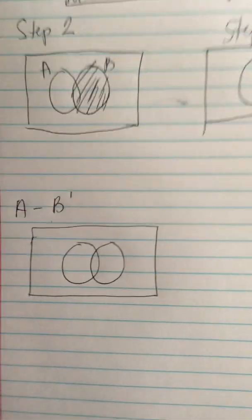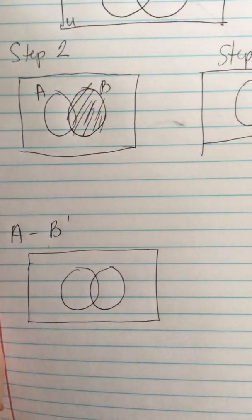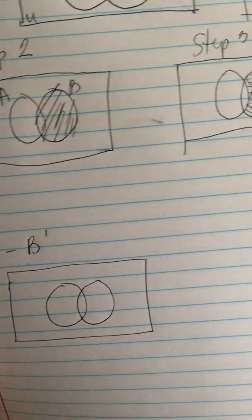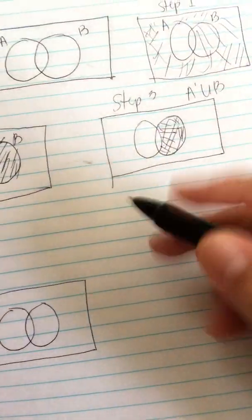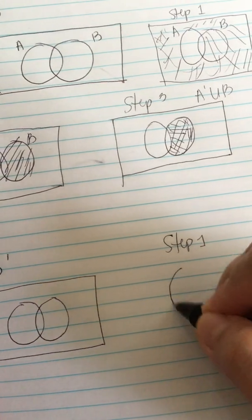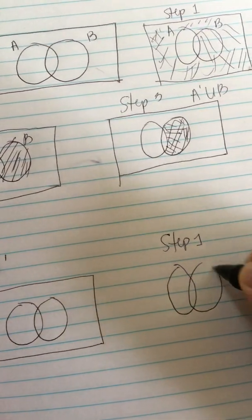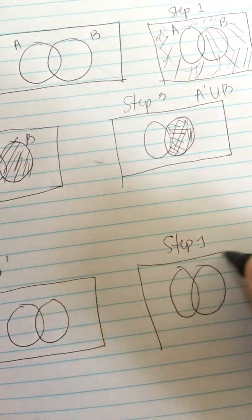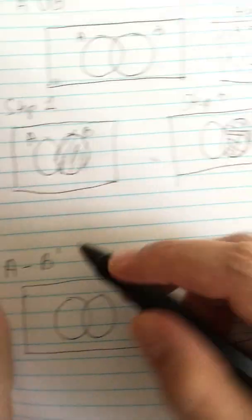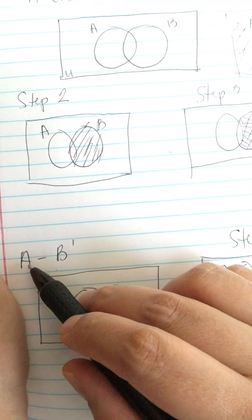Then another problem: A minus B prime. We do the same thing, step one. This is A, this is B, so we shade the A.